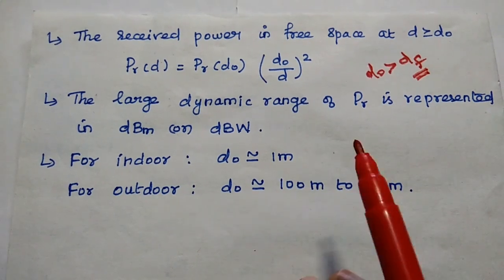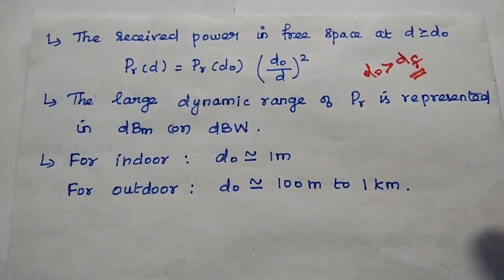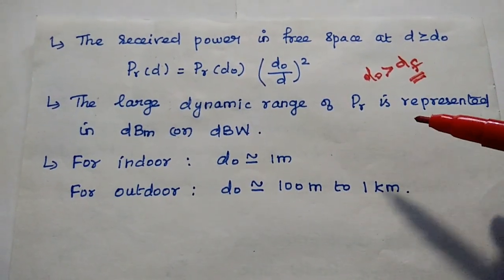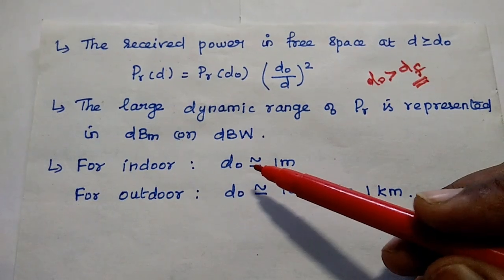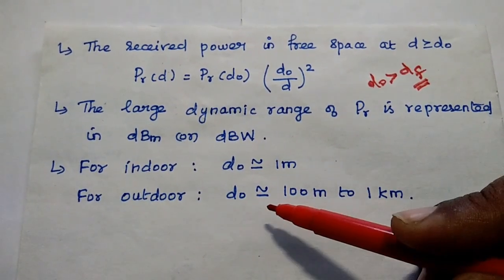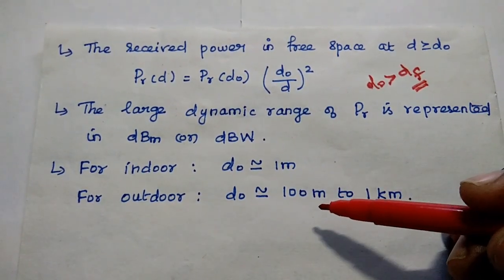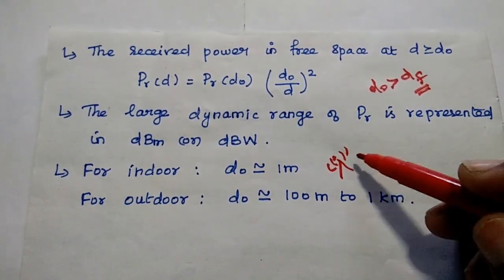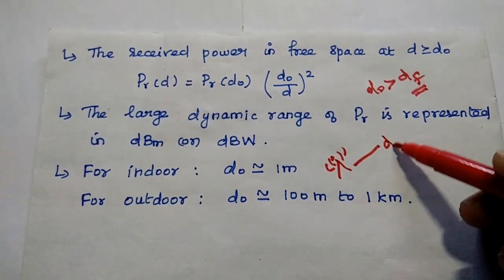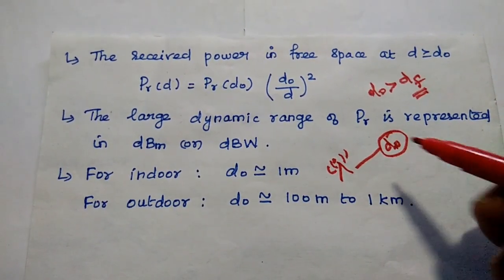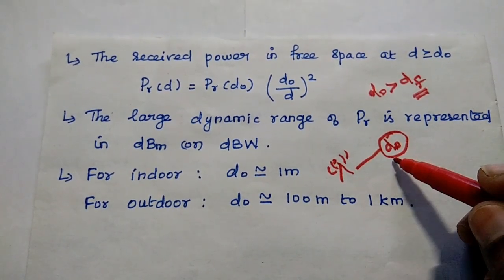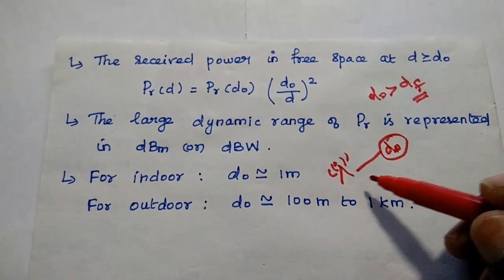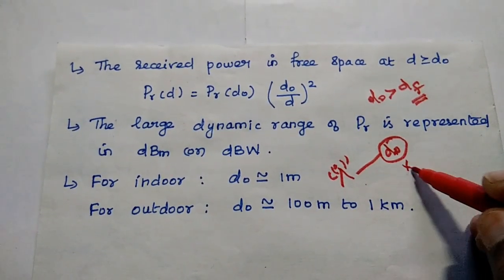The range of received power varies over a large dynamic range and is continuously varying with a large value, so it can be represented in dBm or dBW. The received power in free space at a distance D ≥ D₀ is Pr(D) = Pr(D₀) · (D₀ / D)². The reference distance D₀ must always be greater than the Fraunhofer distance. For indoor environments, the reference distance is 1 meter; for outdoor environments, it is 100 meters to 1 kilometer.